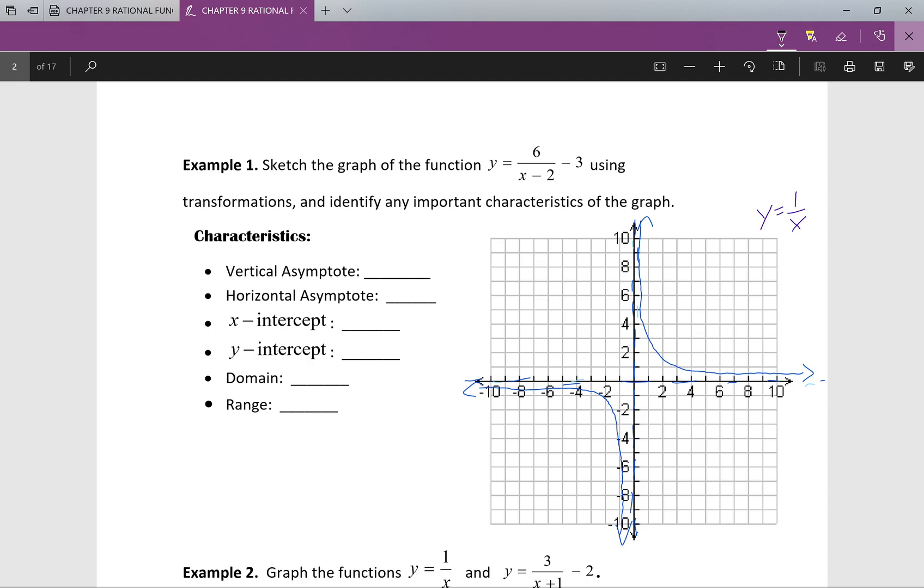For visualization, you guys will see that I have y equals 1 over x written in blue right here. We're just going to remember that this is the parent graph, or this is the base graph that I'm going to be using to draw my newly translated graph. Of note, one thing that we always need to look at when we're shifting these rational functions is right here, I have my vertical asymptote at x equals 0. Here, I have my horizontal asymptote at y equals 0.